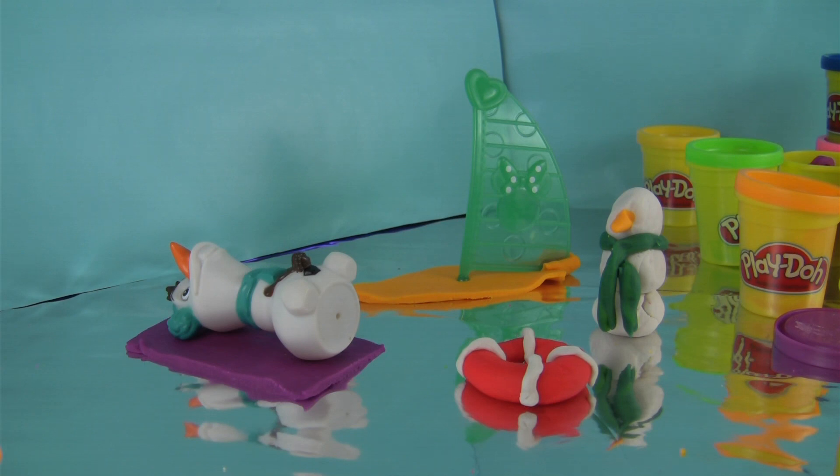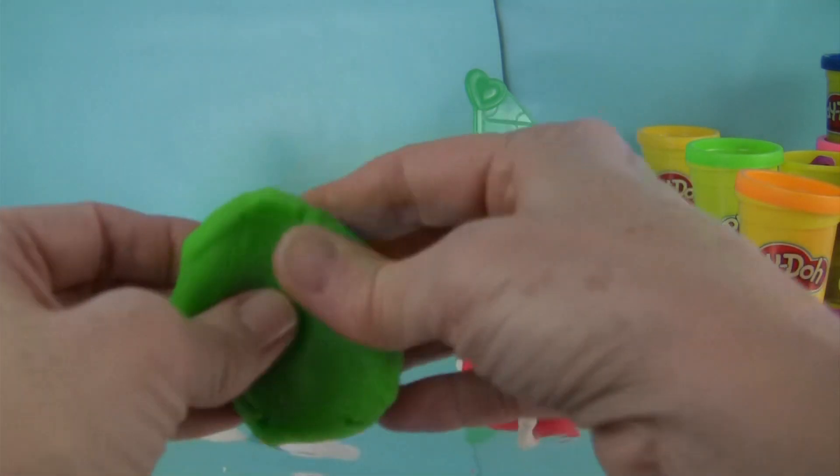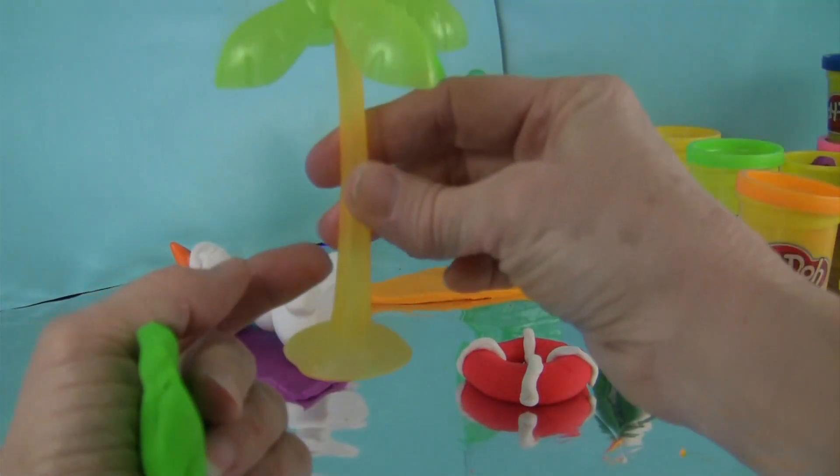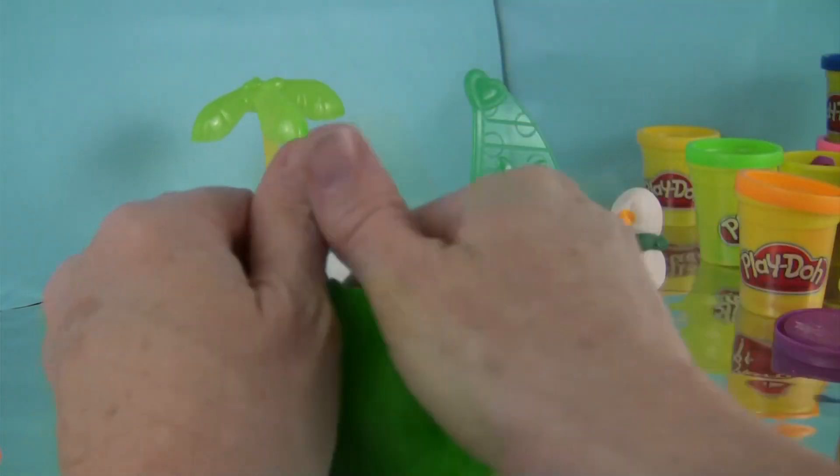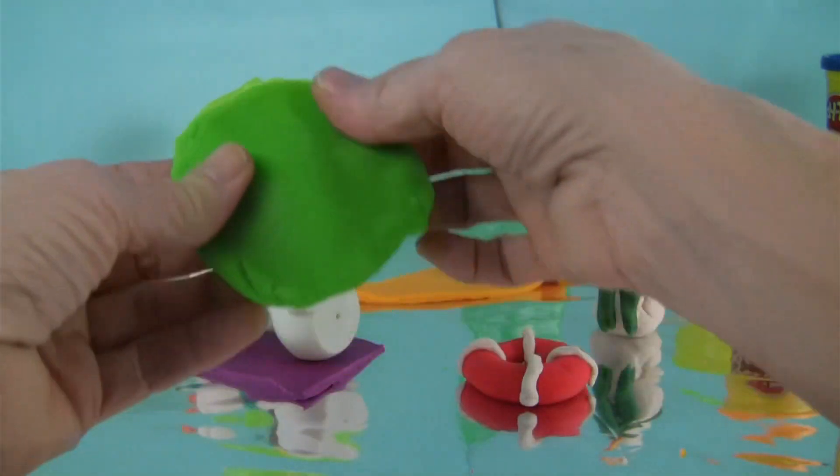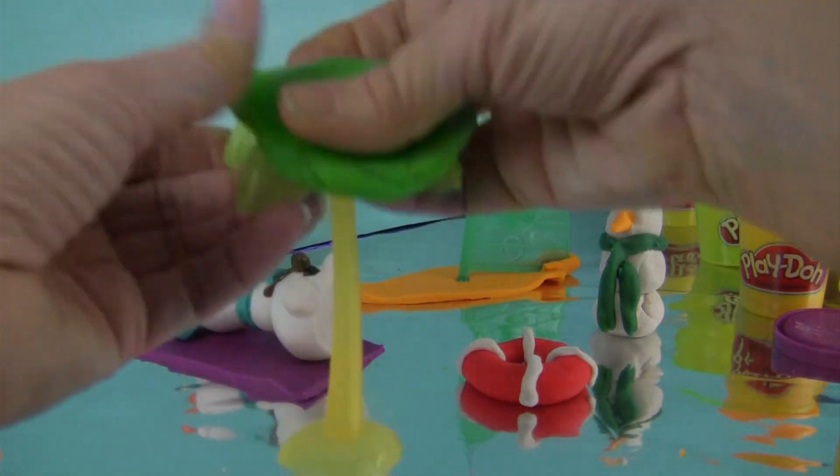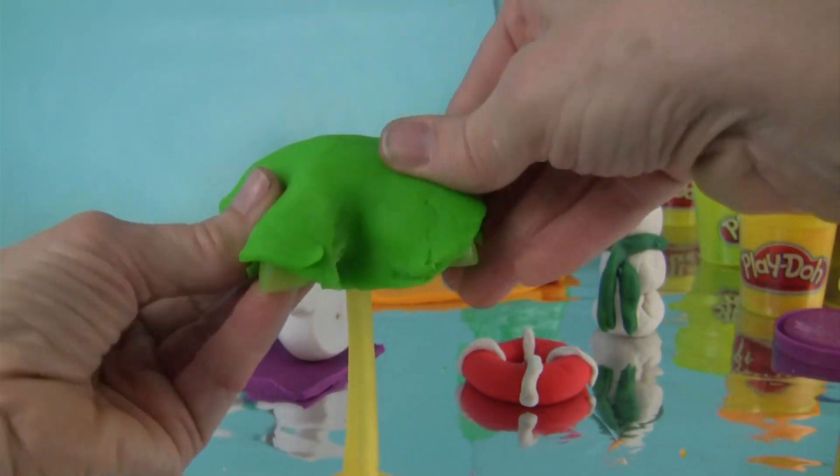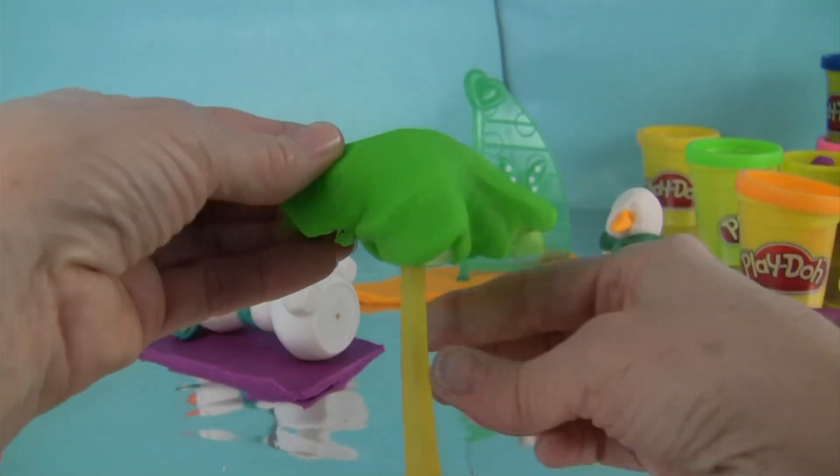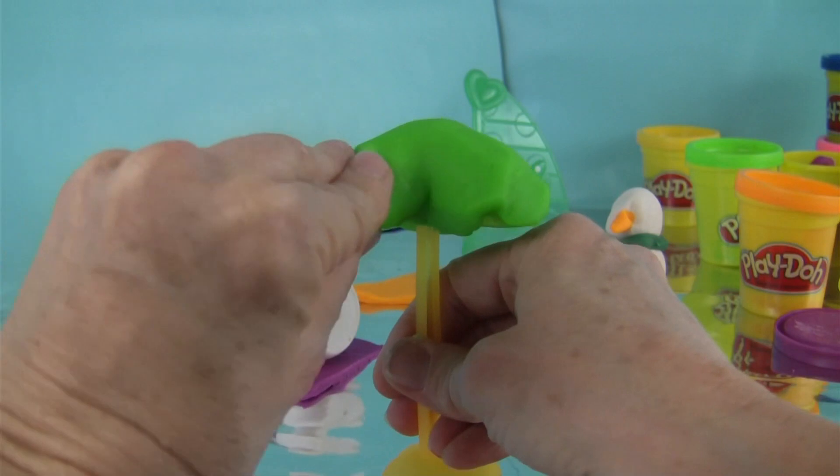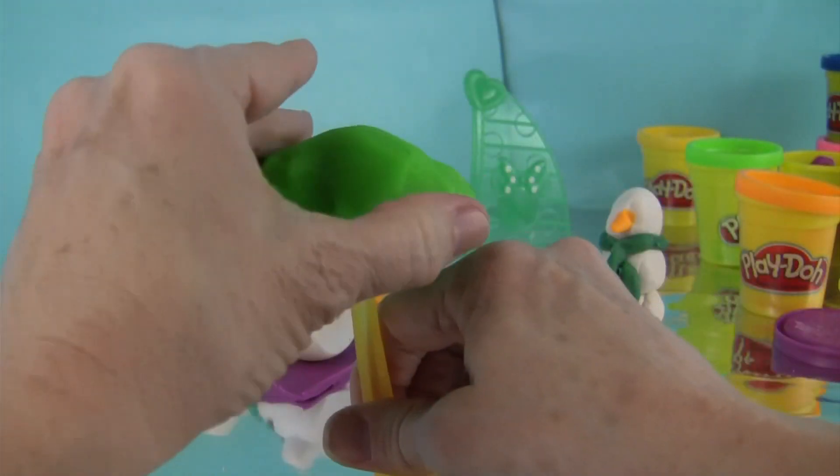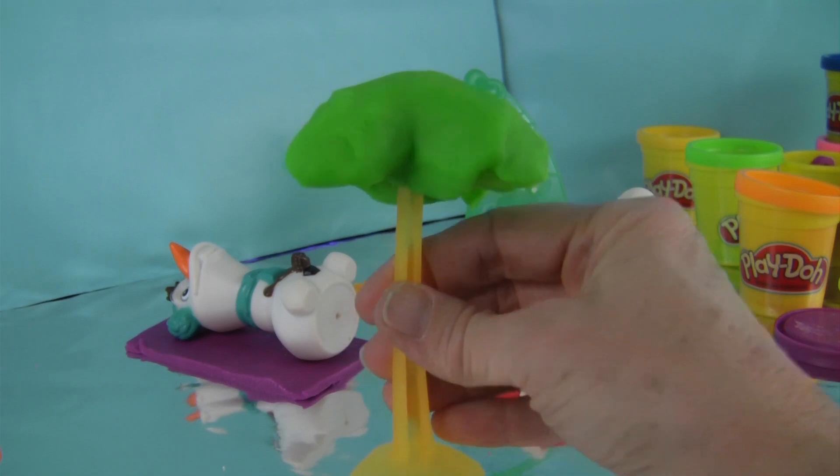He could probably use a little bit of shade. I have a beach tree from my Minnie Mouse play set. I'll turn it into a Play-Doh tree. Ah, perfect.